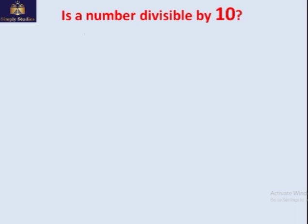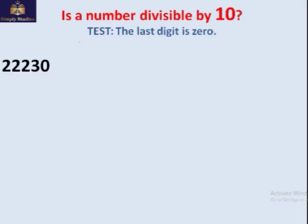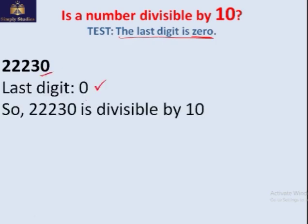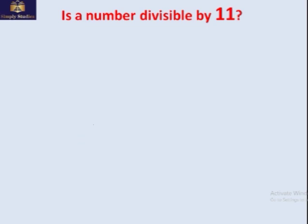Is the number divisible by 10? That's very easy — the last digit has to be 0. If the last digit is 0, the number is divisible by 10. That's it — so easy, and we can test it to confirm.